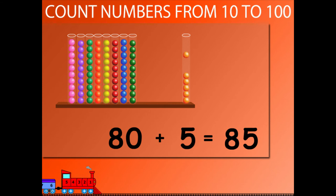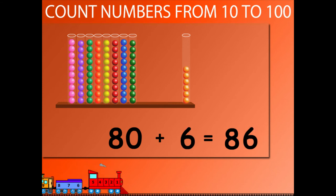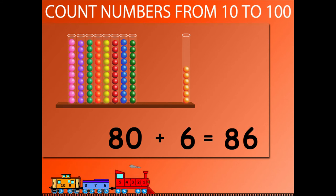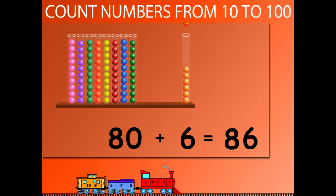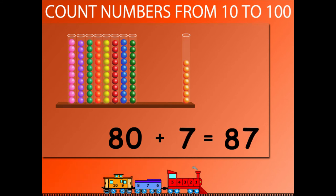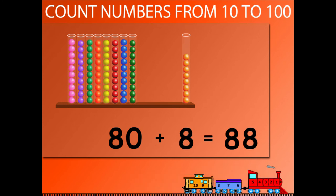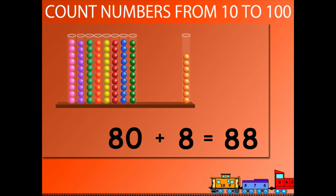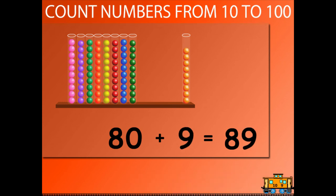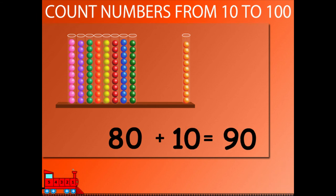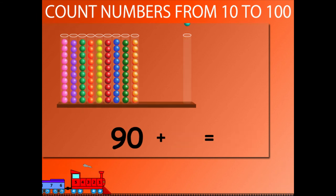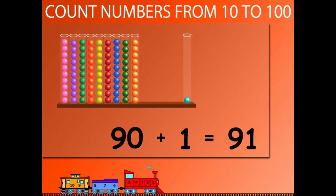80 plus 5 is equal to 85. 80 plus 6 is equal to 86. 80 plus 7 is equal to 87. 80 plus 8 is equal to 88. 80 plus 9 is equal to 89. 80 plus 10 is equal to 90. 90 plus 1 is equal to 91.